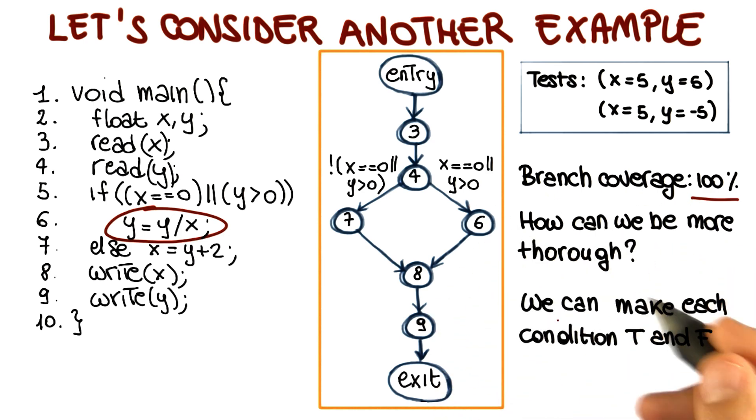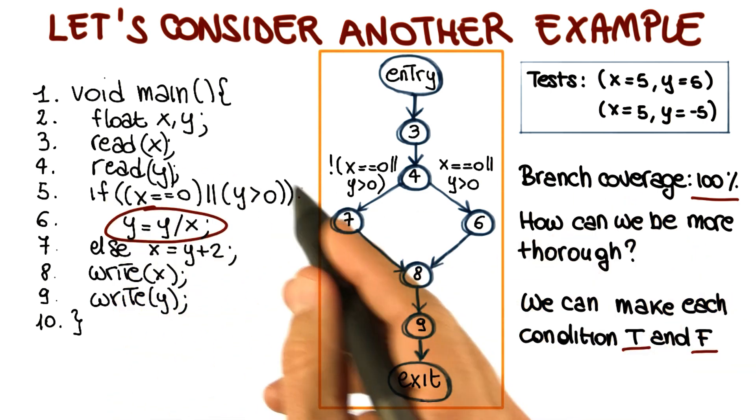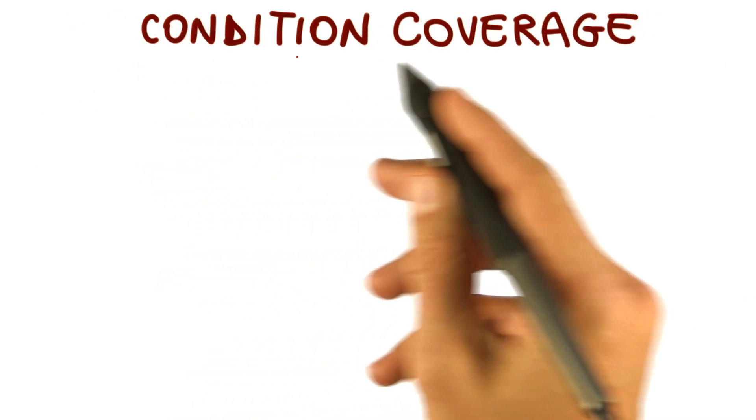And the answer is that we can make each condition true and false, instead of just considering the whole predicate here. And that's exactly what is required by the next criteria that we're going to consider, which is condition coverage.